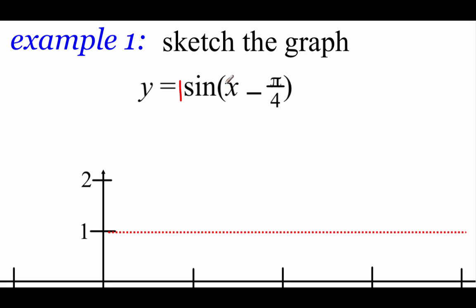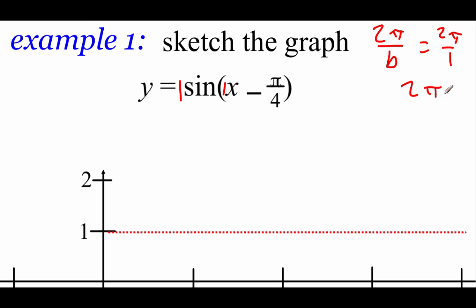Next we deal with the B value to find the period. B is the number in front of our x — again there's nothing there, so it's an implied 1. The period is 2π over B, so 2π over 1 is just 2π. We want to split that into four equal parts to know how far apart our points will be spaced, so 2π divided by 4 gives us π/2.